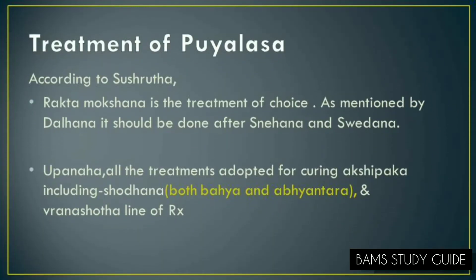For Chikitsa of Pooyalasa, according to Sushruta Uttara, 12th chapter, 45th shloka: 'Pooyalase Shonita Mokshanamcha Hitam Tadhevapi Upanahanamcha Kritsno Vithis Chekshana Paka Gati Yadha Vidhanam Bishajaprayojya.' Rakta Mokshana is the treatment of choice after Snehana and Svedhana. Upanaha — Pralepa and Bandhana using Churnas with Doshahara, Vrana Shodhana and Chakshushya properties. Kritsno Vithi means both Bahya and Abhyantara Shodhana Karma, and Paka Gati means treatment of Vrana Paka.